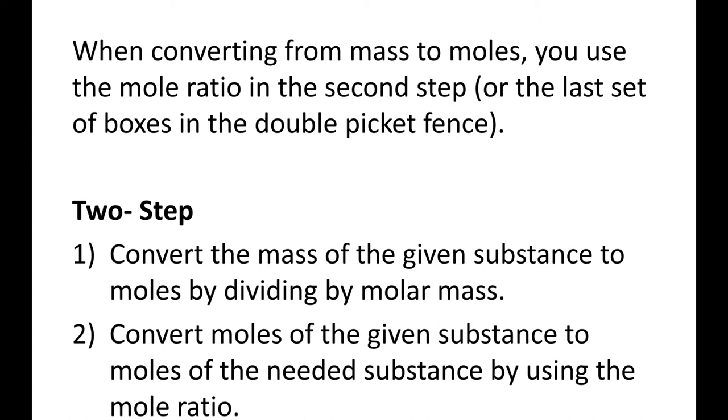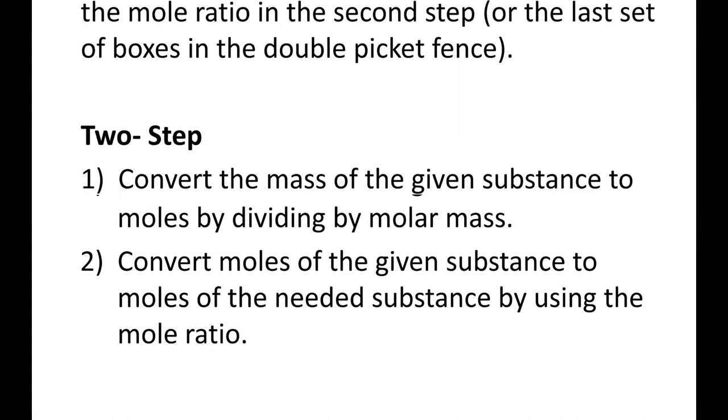Basically with mass to mole conversions, we're going from mass of one substance to mole of another substance. So we have to do it in two ways. We can either use a two-step method, which basically involves two picket fences, or we can do a double picket fence, depending on which way you're more comfortable with. So let's look at the two-step method first.